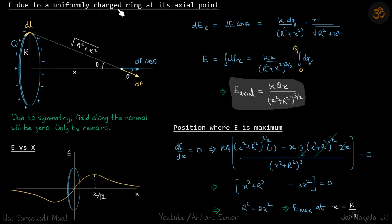Field due to a uniformly charged ring at its axial point. We have a ring with charge q and radius r, and at a distance x from its center, we need to find the electric field.